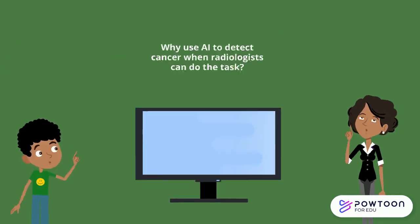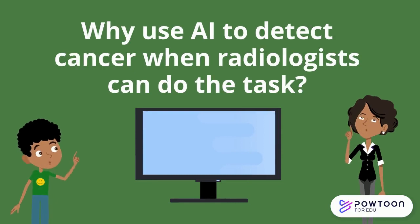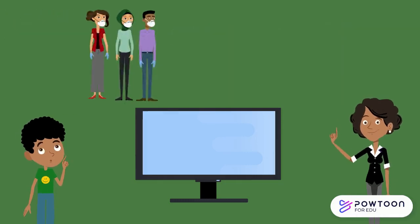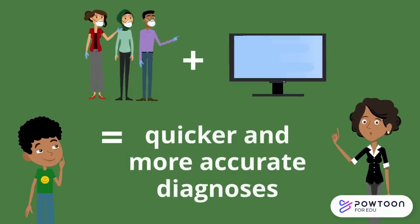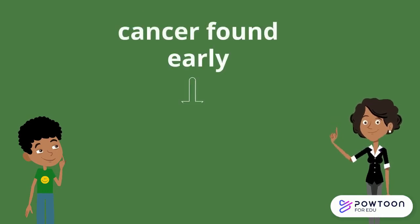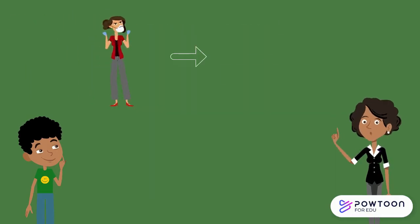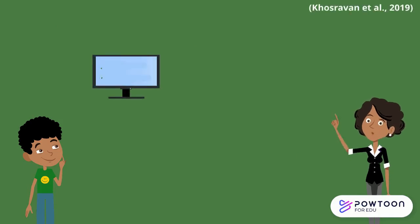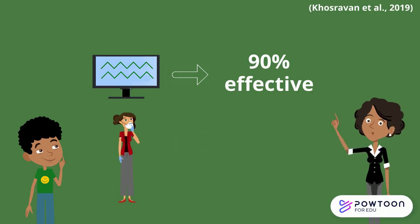But why might we use AI to detect cancer when we already have radiologists who are trained to interpret medical images? Great question. The goal of using AI to detect cancer is not about replacing the jobs of radiologists, but rather aiding them in establishing quicker and more accurate diagnoses. Because when cancers are found early, the prognosis is often much better for patients. Even the most experienced clinicians make errors because the human eye is not perfect. AI has the potential to be extremely accurate. For example, due to the power of deep learning, a system was found to be over 90% effective at detecting lung cancer spots. For comparison, radiologists typically average a 65% accuracy.